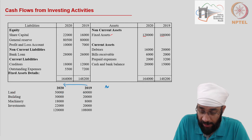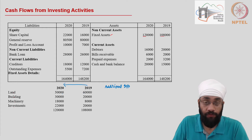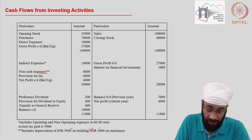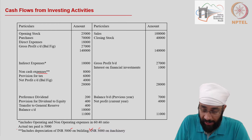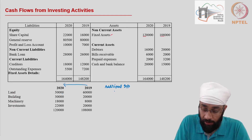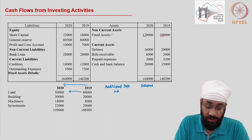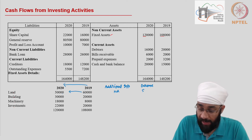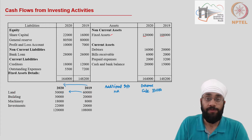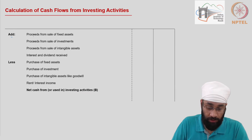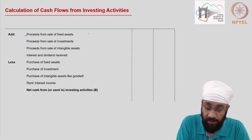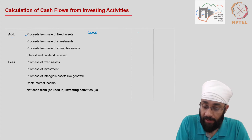We do not have any other additional information about land. Even if you look at the depreciation, it is on building and on machinery — about land we have no additional information. Therefore we are going to treat this change, the reduction in the value of the land, as a sale of land worth rupees ten thousand, and we are going to bring this amount to sale of fixed asset — land: ten thousand.